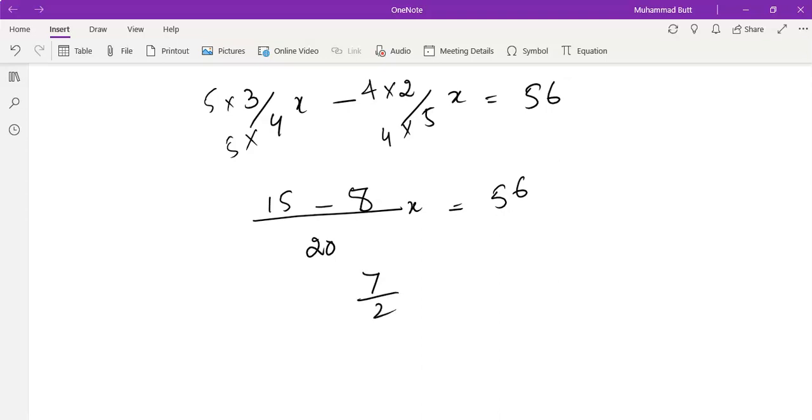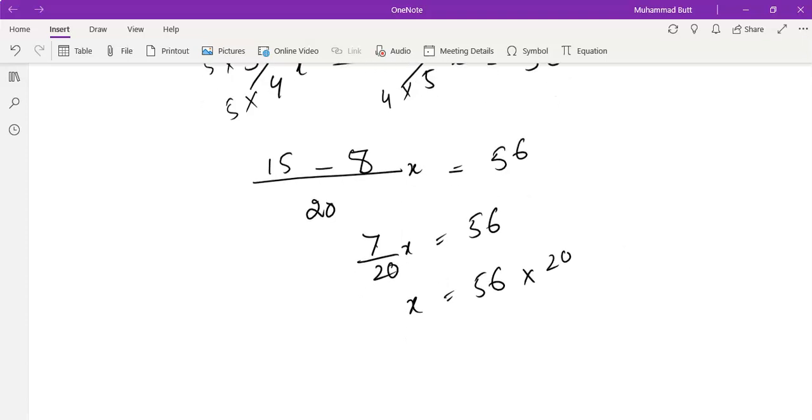It is 7 by 20x. 7 by 20x equals to 56. And 7 by 20, the fraction is being multiplied by x over here. So when we shift it to the other side, the fraction will be inverted. We take the reciprocal of 20 by 7.